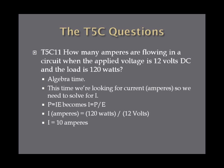How many amperes are flowing in a circuit when the applied voltage is 12 volts DC and the load is 120 watts? It's algebra time — what we're looking for is the current, or I, in the P equals IE formula, so we need to solve for I. Taking the base formula P equals IE and dividing both sides by E to isolate I, you get I equals P divided by E. Substituting in 120 watts divided by 12 volts, you get I equals 10 amperes.